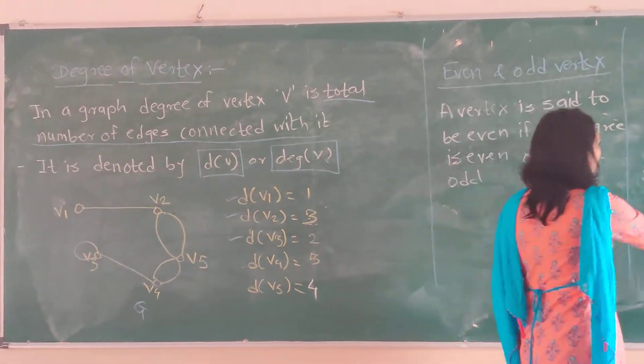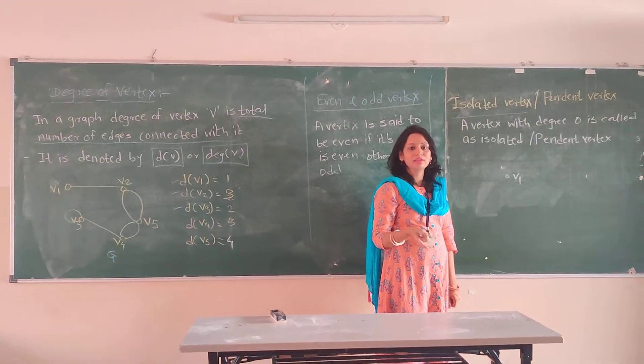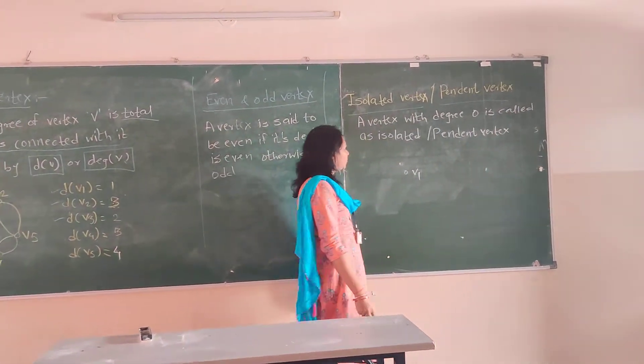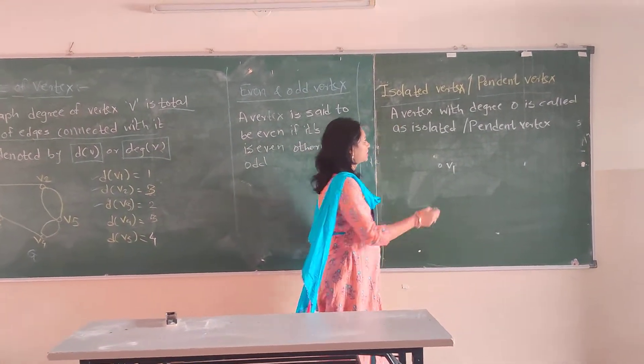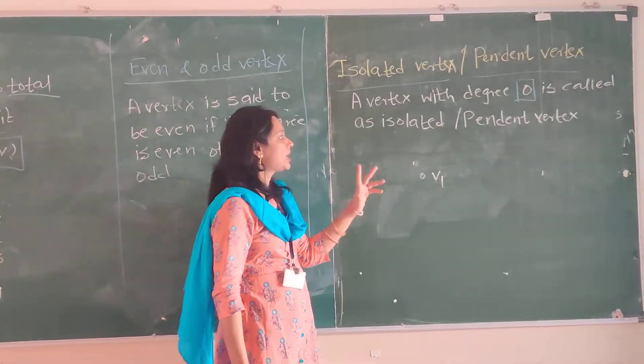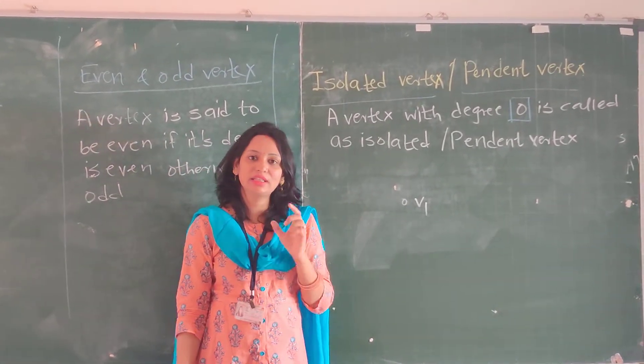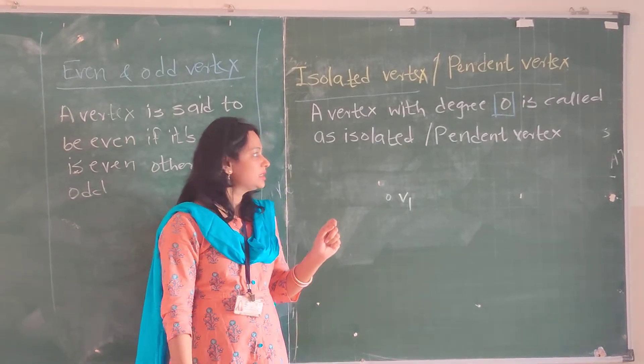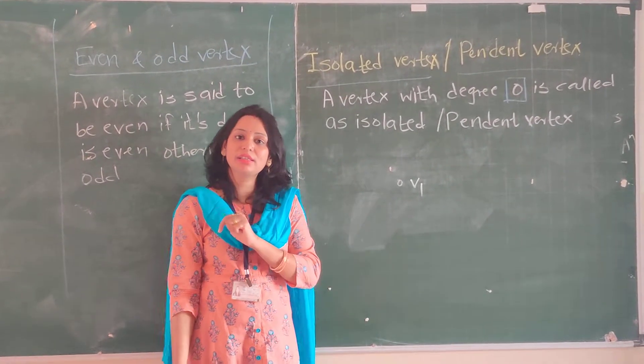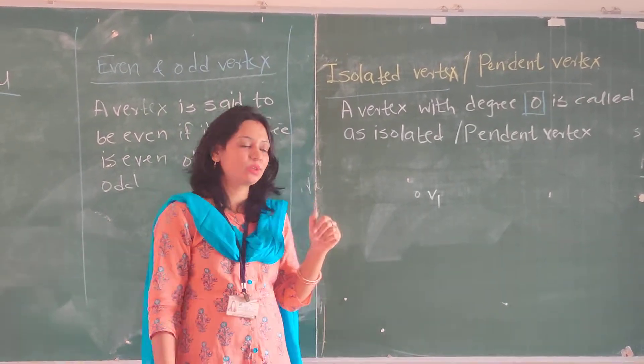The next concept is isolated vertex. This isolated vertex is also called pendant vertex. A vertex with degree 0 is called an isolated or pendant vertex. This means the vertex is present in the graph but there is not a single edge connected to it. That is called an isolated vertex.